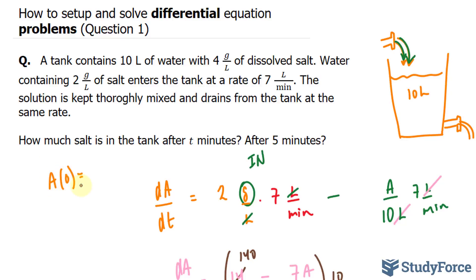At time is equal to 0, I'm saying that we have 40 grams of salt. The reason why is because if I take 10 liters, this volume, and multiply it by 4 grams per liter, the liters cancel out and we're left with 40.